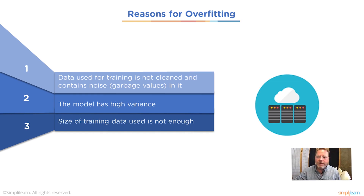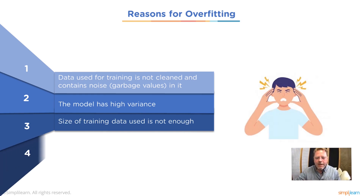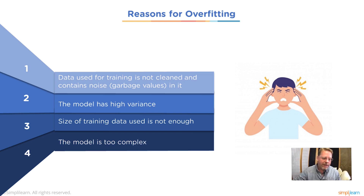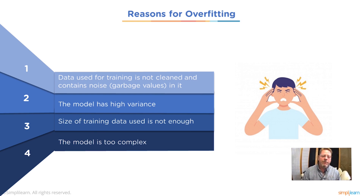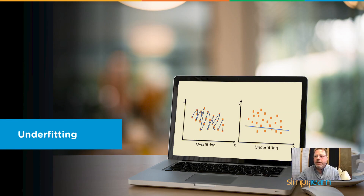The size of training data used is not enough — a small amount of data is going to also cause this problem. You only have a few points and you try to plot everything. The model is too complex — this comes up a lot. We put too many pieces together and how they interact can't even be tracked, so you have to go back, break it up, and find out what actually correlates and what doesn't.